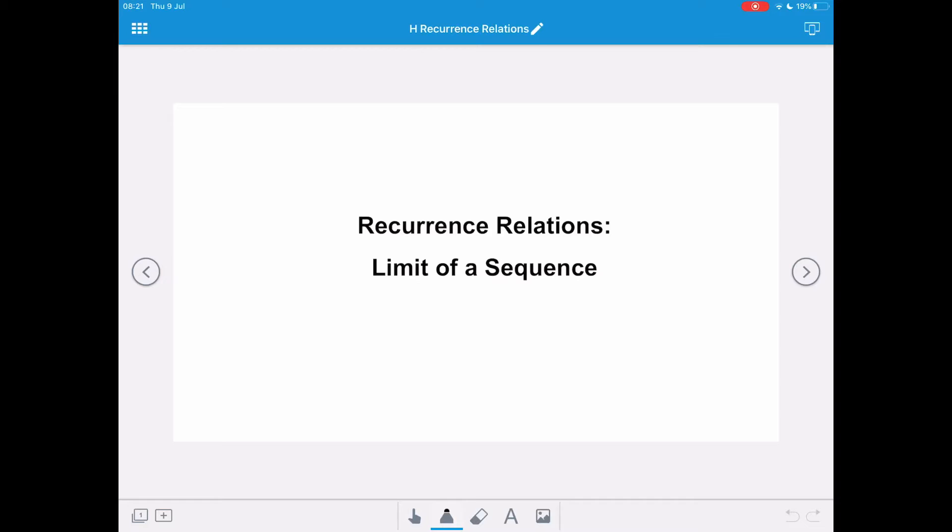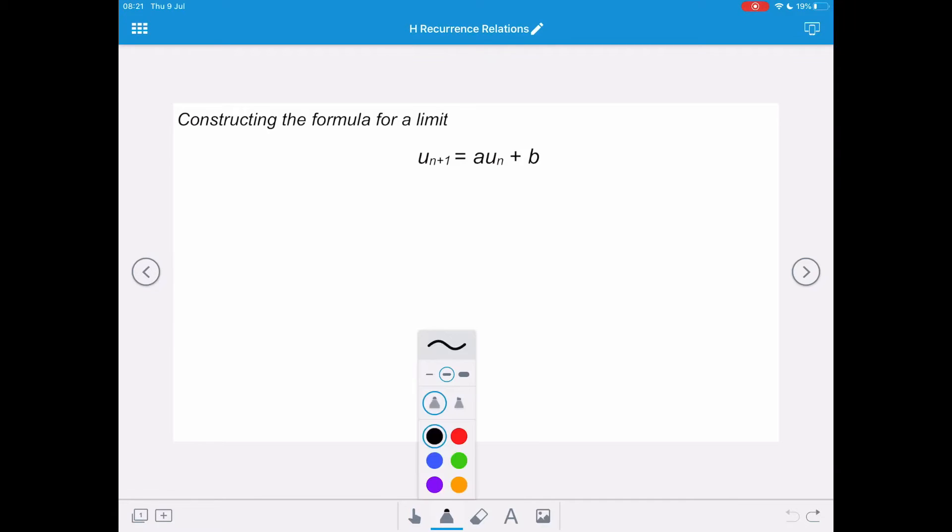So how do we go about determining whether or not a recurrence relation has a limit? First of all, we're going to construct the formula for a limit. So un+1 equals aun plus b is our recurrence relation formula. And if we say that the limit is when un+1 and un are both equal to each other, we can give that the letter L for limit. So we substitute in the letter L on both sides. We've got L equals aL plus b.